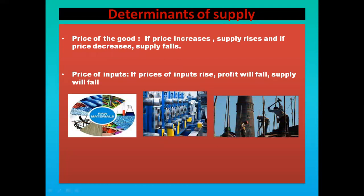Next is prices of inputs. Inputs can be raw materials, machines used to produce things, or workers. If prices of inputs are rising, the profit will fall — the producer will tend to earn less profit and the supply will fall.